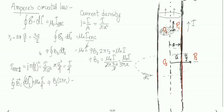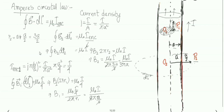Here r1 = a/2 is the radius of the Amperian loop. So B1 = μ₀(I/4) divided by (2π × a/2) = μ₀I/(4 × 2π × a/2) = μ₀I/(4πa). So the two values obtained are: B2 = μ₀I/(3πa) at point P2 (outside) and B1 = μ₀I/(4πa) at point P1 (inside).